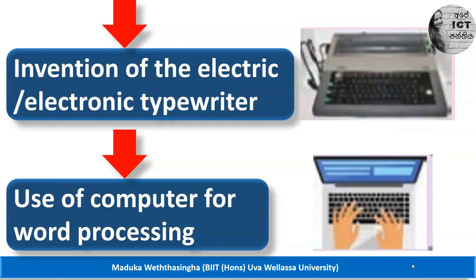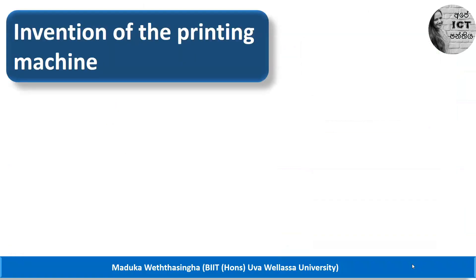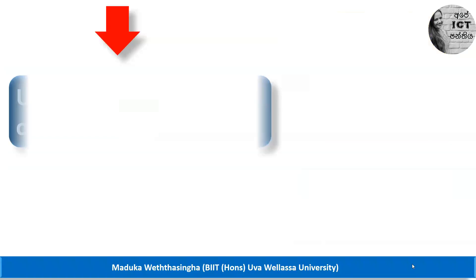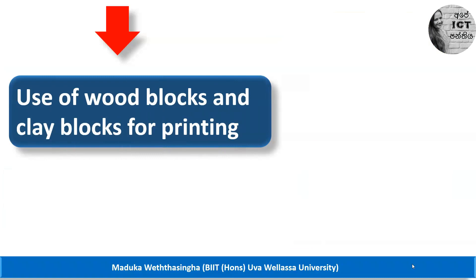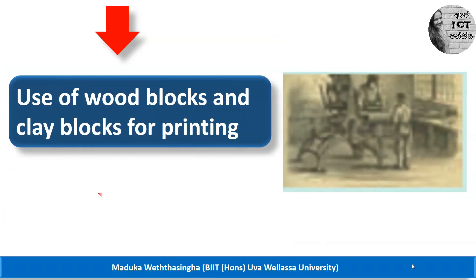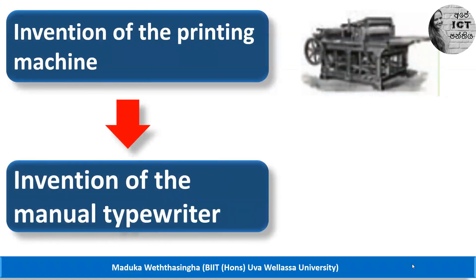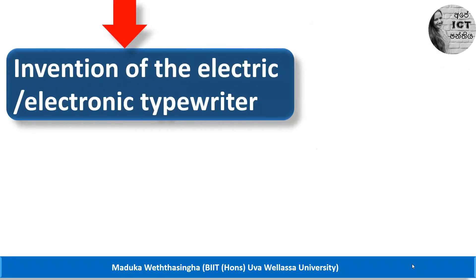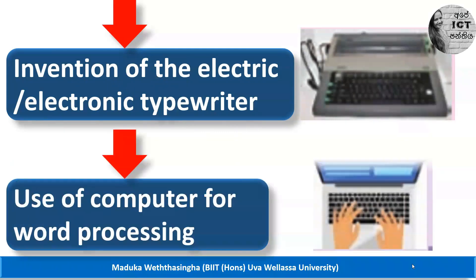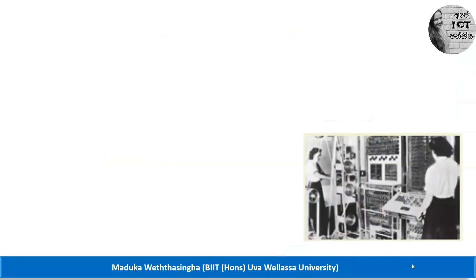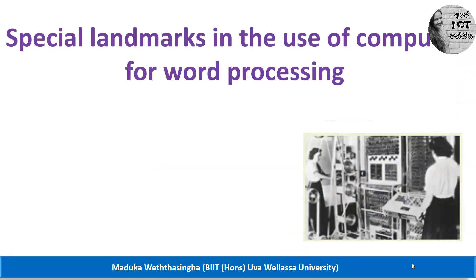So this is the history of the word processor. First, our ancestors used stones, leaves, and skin for writing. Then they invented books and papers. In the third stage they started printing using wood and clay blocks. In the fourth stage they invented the printing machine, then the manual typewriter, then the electric typewriter, and finally we now use computers with word processing software.